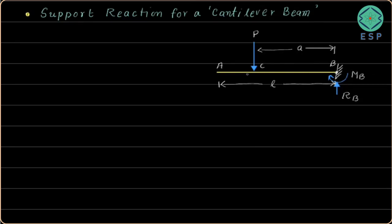The moment reaction MB at point B prevents the rotation of the beam in the anticlockwise direction, so this moment reaction will be in the clockwise sense. For a cantilever beam at a fixed support, we get a force reaction RB and a moment reaction MB.